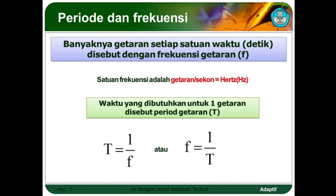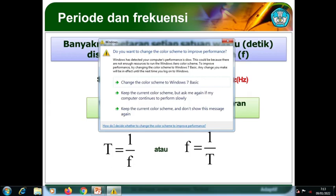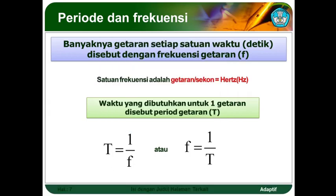Dalam getaran, kita akan mengenal yang namanya periode dan frekuensi. Apakah itu periode dan frekuensi? Frekuensi adalah banyaknya getaran setiap satu satuan waktu atau satu sekon. Satuannya hertz. Frekuensi adalah satu per periode. Kemudian periode adalah waktu yang dibutuhkan untuk melakukan satu kali getaran.